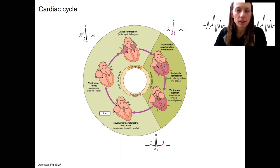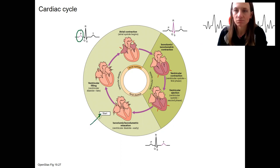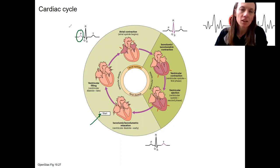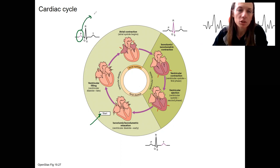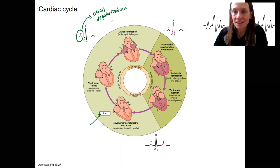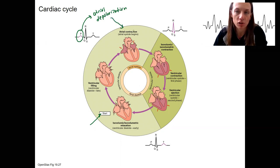We're going to start with a P wave, and we'll start with atrial contraction because that's where we started our EKG. Our P wave corresponds to atrial depolarization, which corresponds to atrial contraction. This is the beginning of atrial systole.